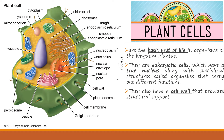Plant cells are considered as the basic unit of life in all forms of organisms in the entire kingdom Plantae. They are also considered as eukaryotic cells, which have a true nucleus, along with special structures called organelles that carry out different functions. They also have a cell wall that provides structural support.